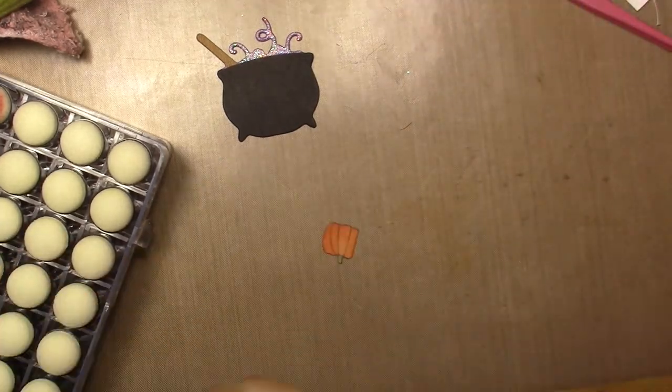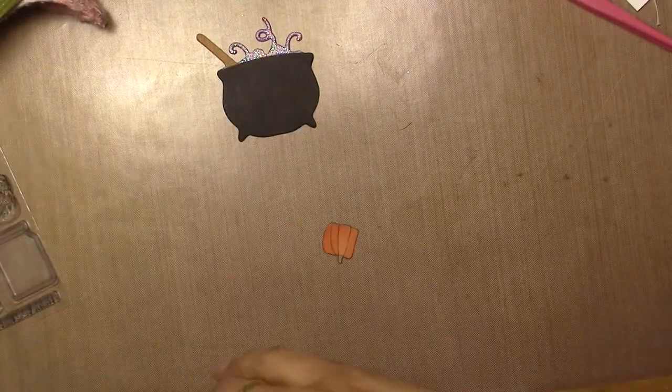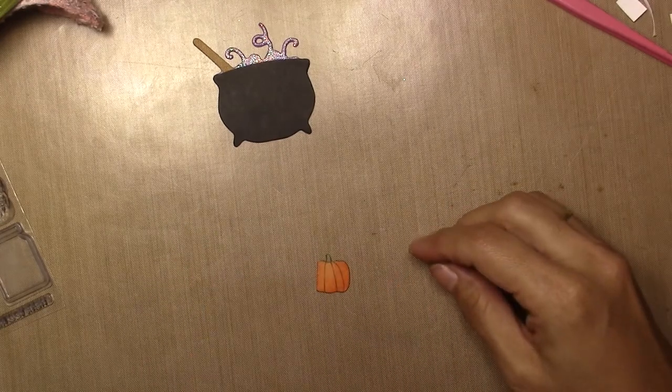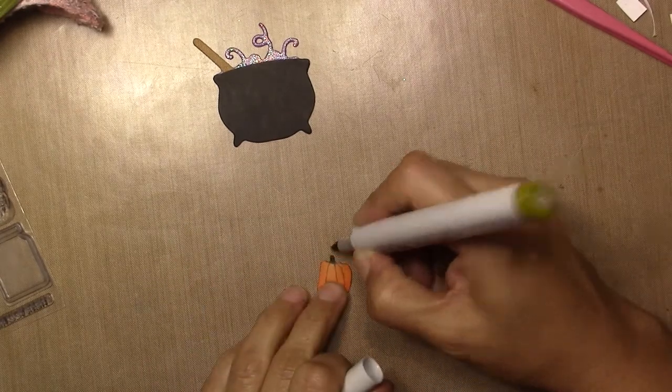And I cut from this pattern paper a little pumpkin. It's just the half of the pumpkin because it's going to be in the back of the cauldron when I build my scene.